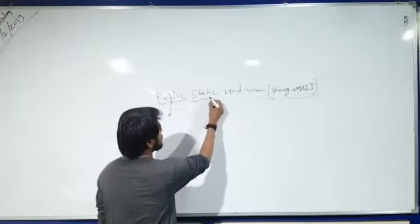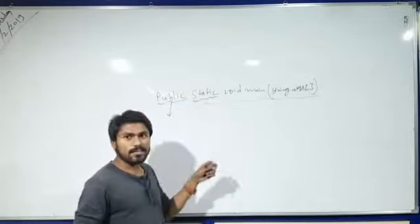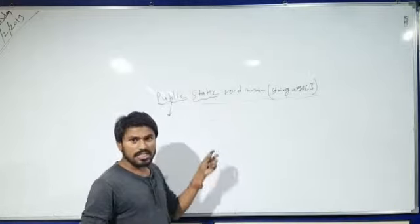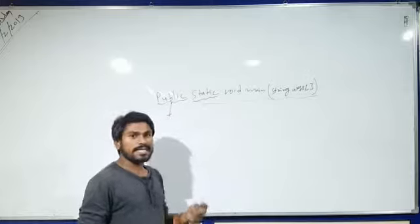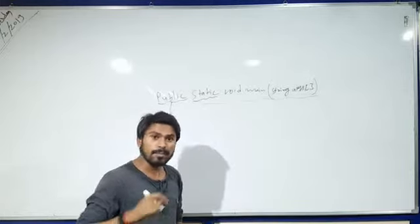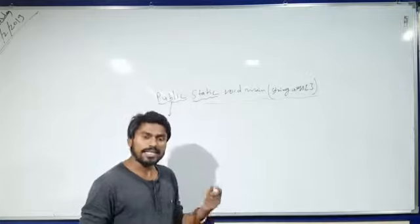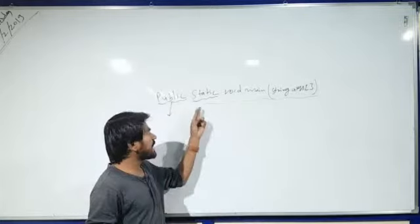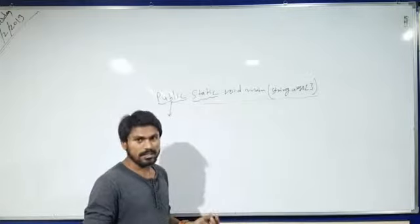Now, 'static'. We know that static is a keyword. And if I use the static keyword on a method — any method — then we don't need to create an object of that method. So we can say that if I use a static method, then we can save memory.